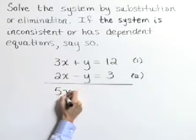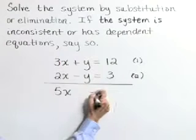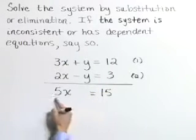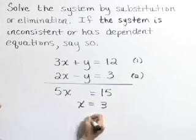Adding we get 5x, y is gone. On the right side, 15. Dividing by 5 gives x equals 3.